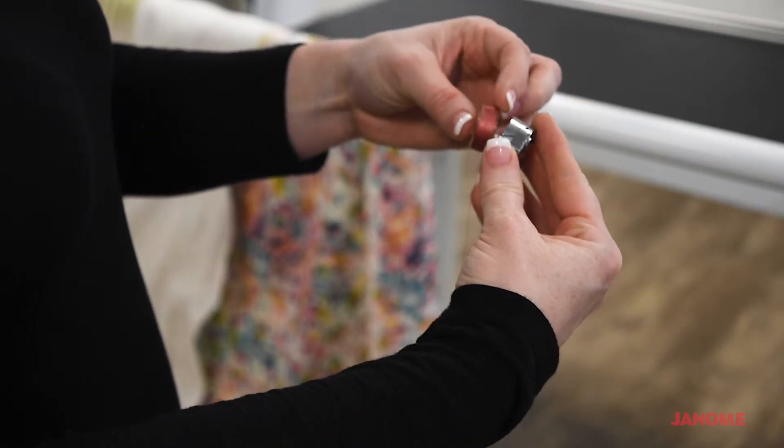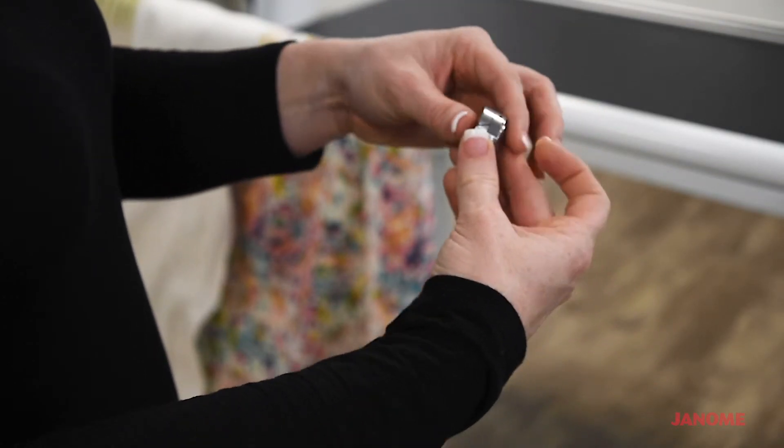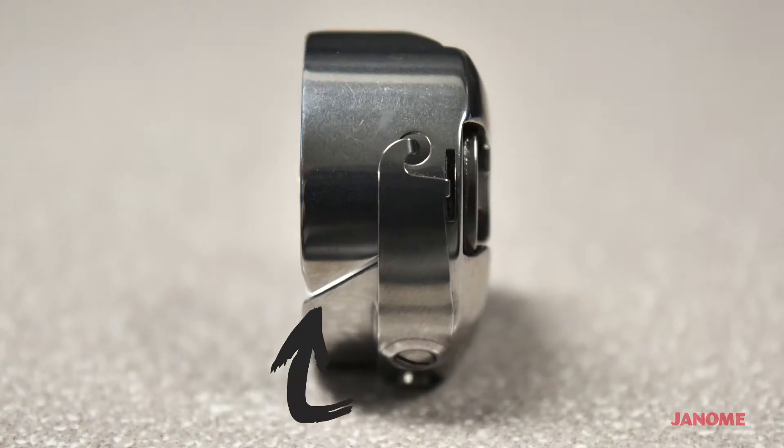Once you've ensured that, put your bobbin in the bobbin case, bring your thread through this little slip right here and underneath this flap.